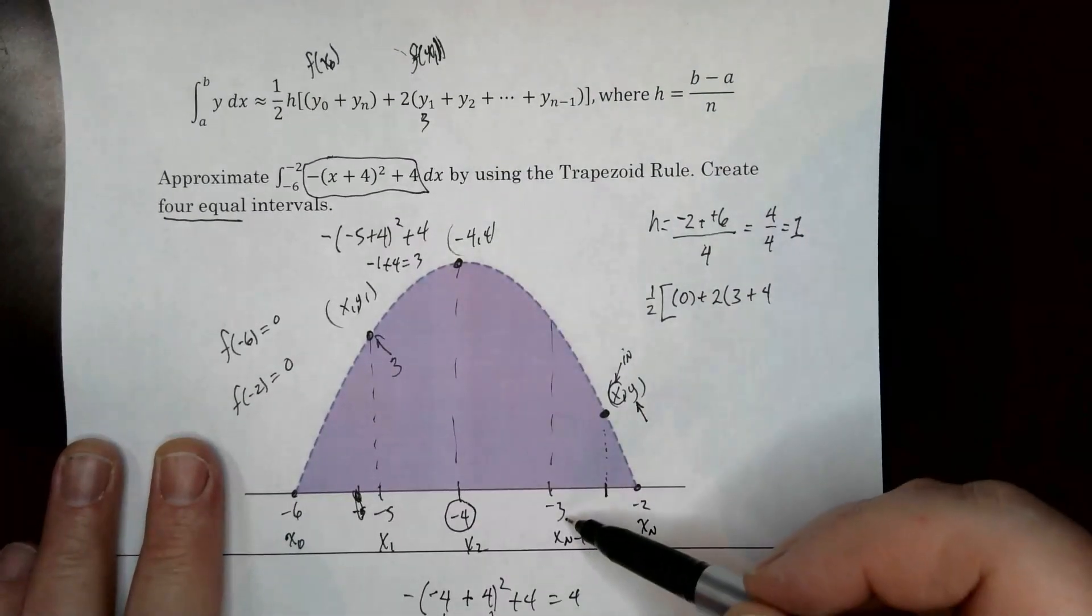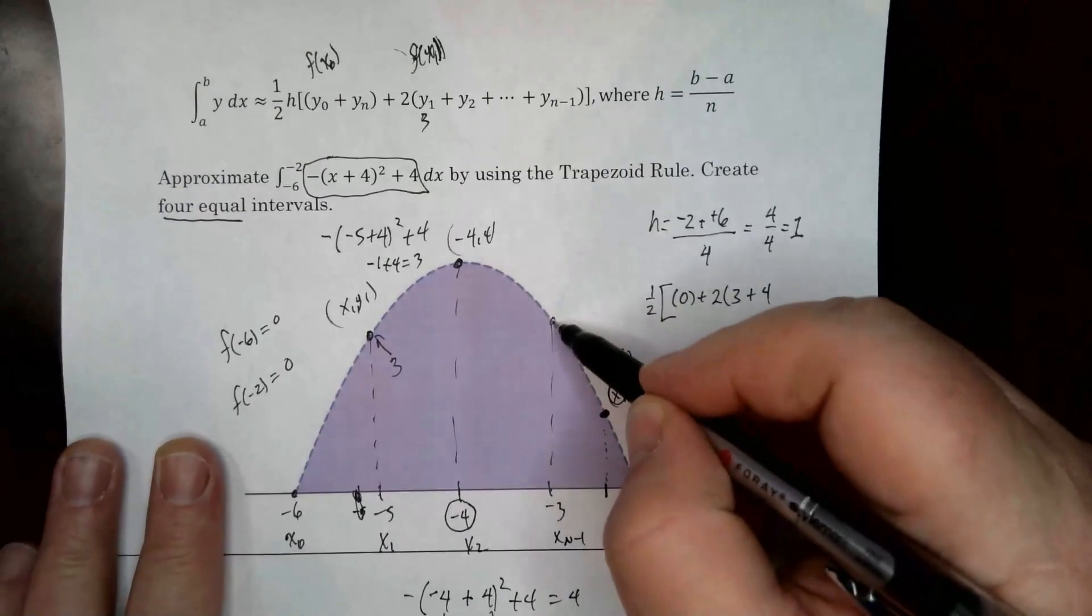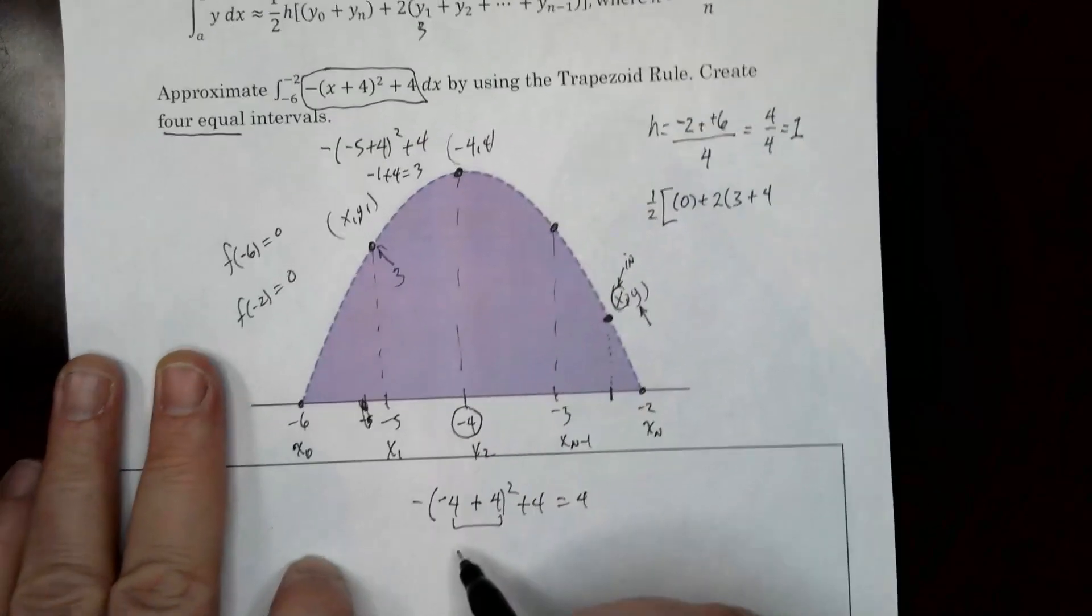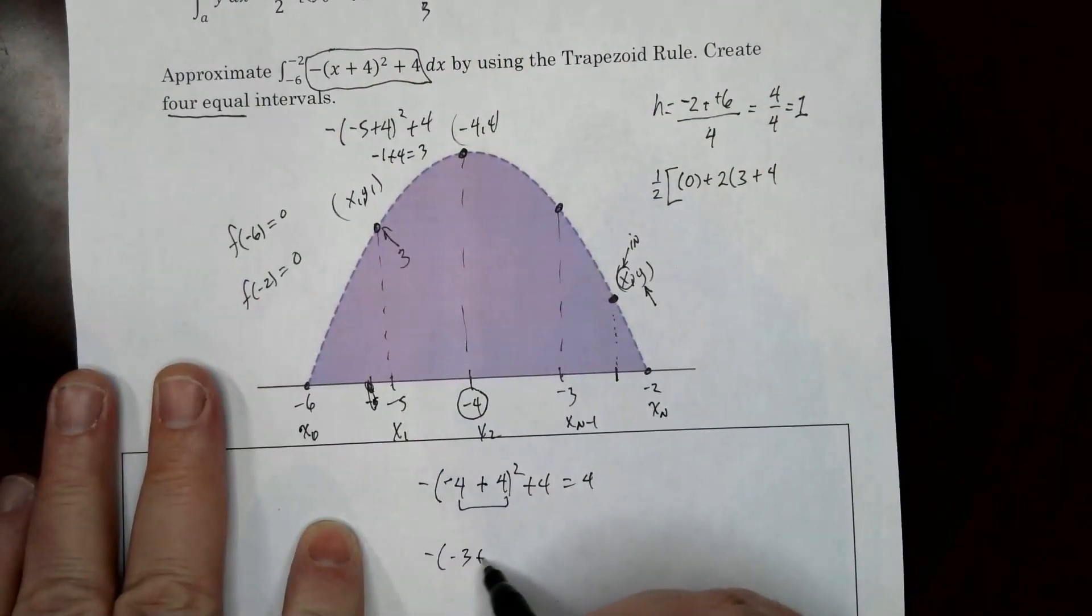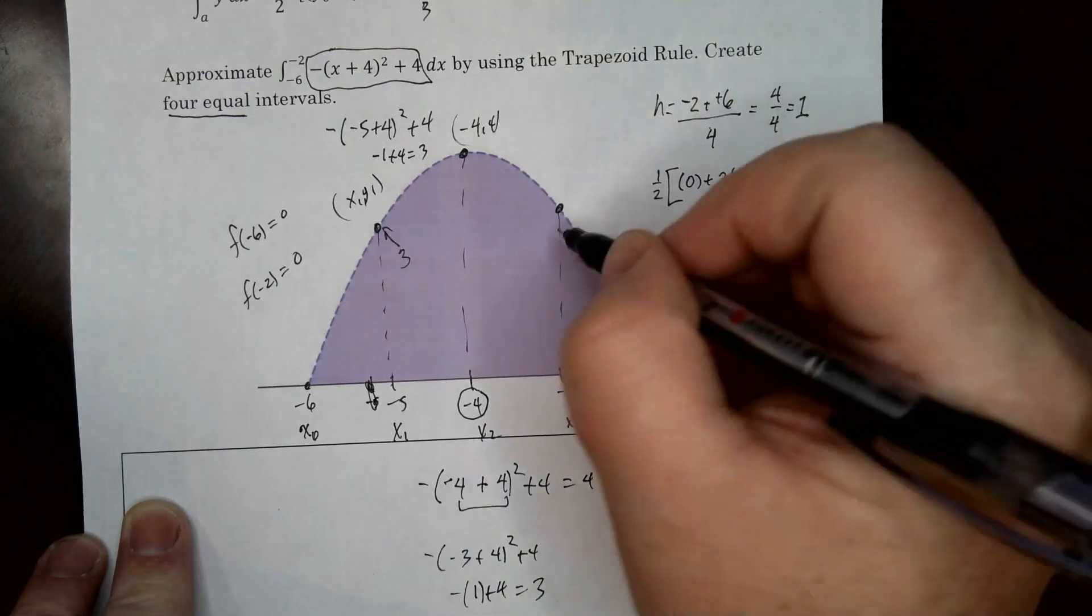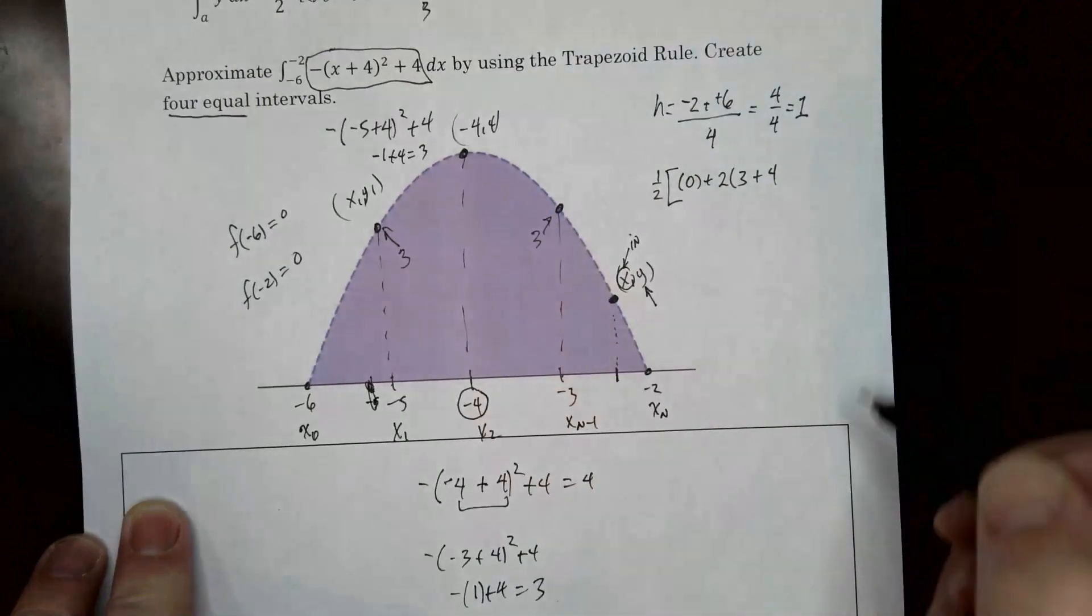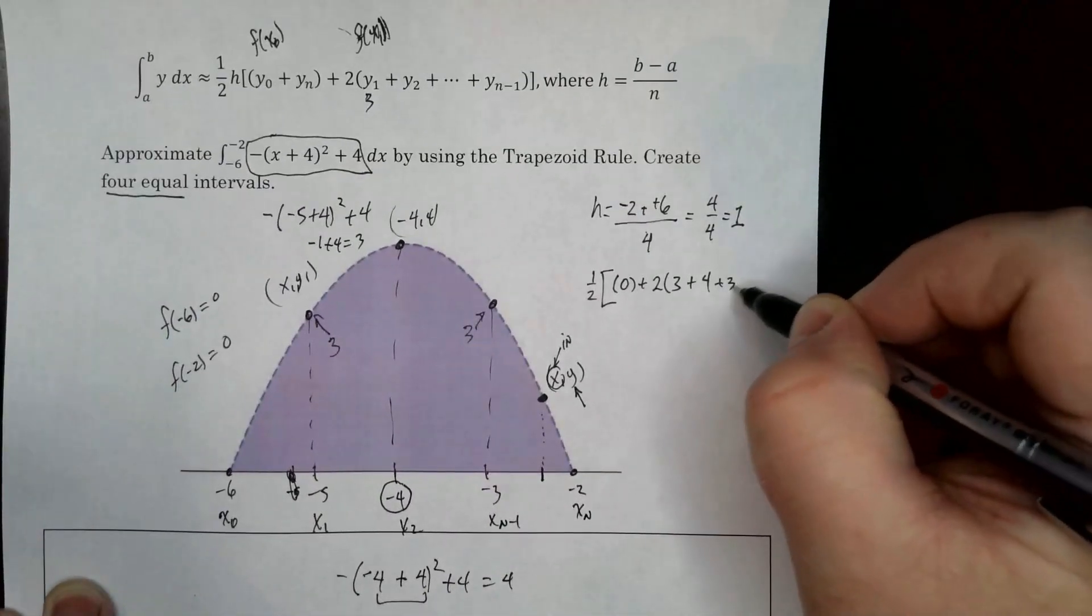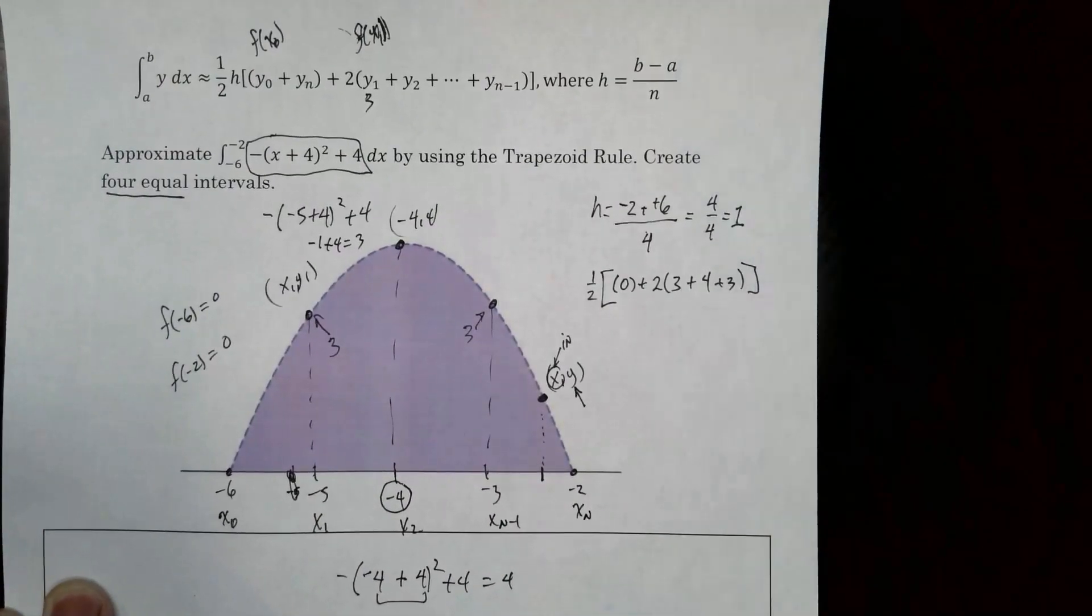Now we have one more. What happens? What's y when x is negative 3? So let's go ahead and do that down here. So negative 3 plus 4 squared plus 4. So one squared. Negative 3 plus 4 is 1. One squared is 1. So that is 3 again. All right? So that's 3. There we go.